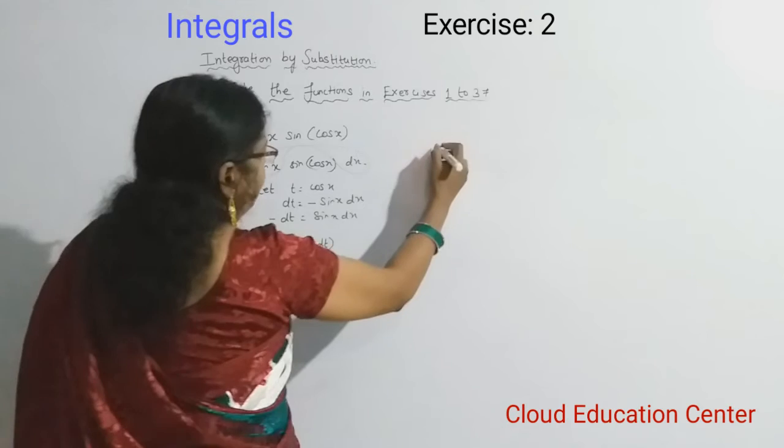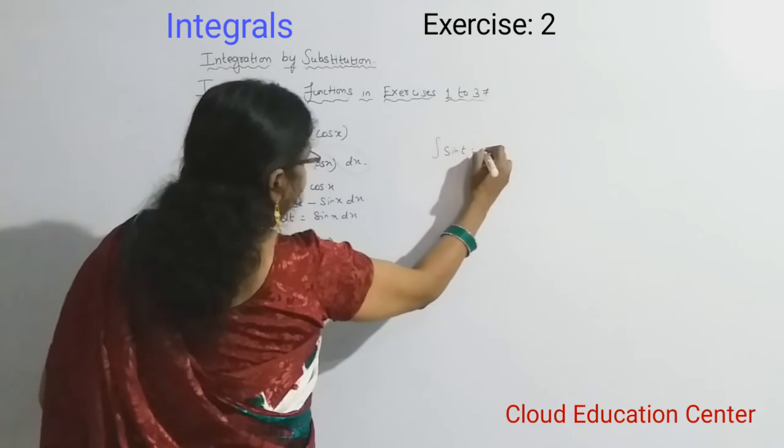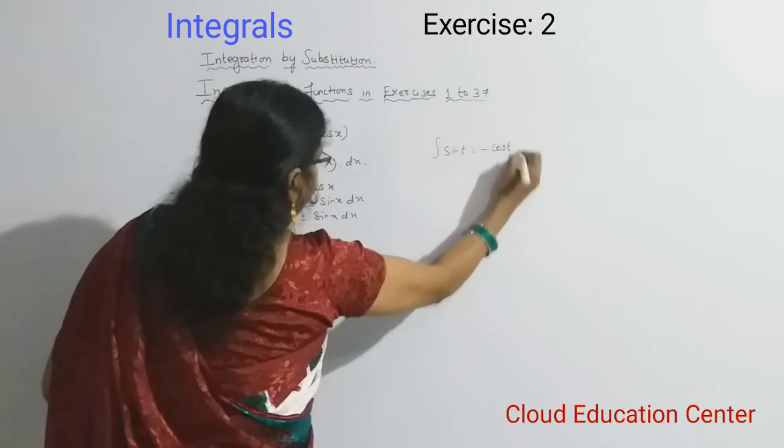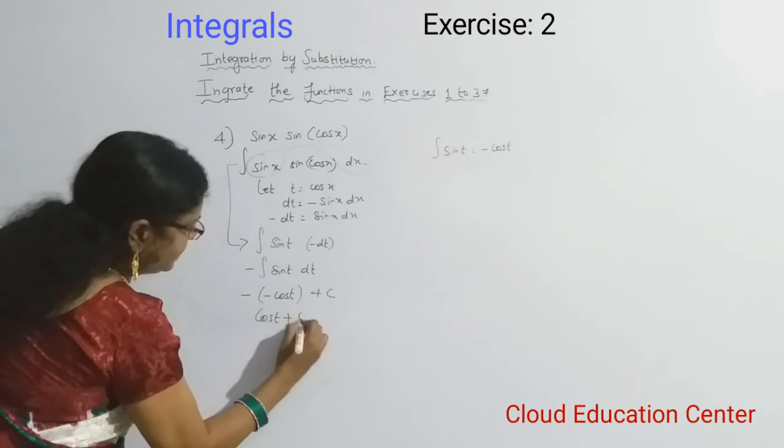Plus c. So that means integration of sin t is equal to minus cos t. So minus into minus is plus. So we will get cos t plus c.